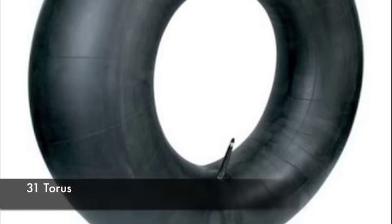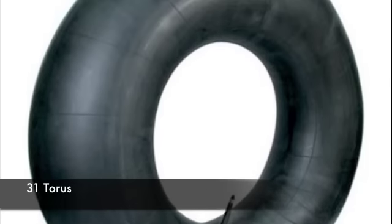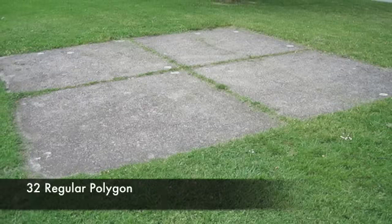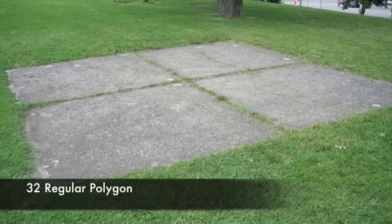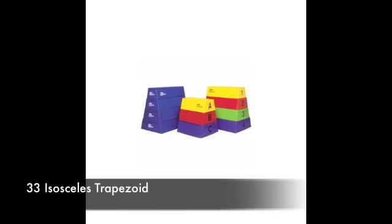This inner tube, used to float on, is shaped like a torus. This four square court is in the shape of a regular polygon. The front and back face of these objects, used for jumping over, is shaped like an isosceles trapezoid.